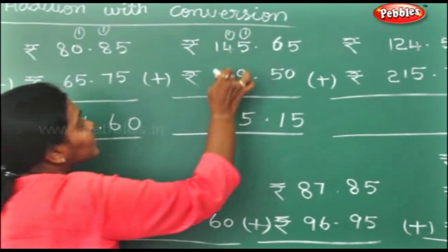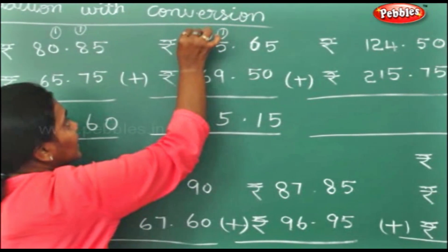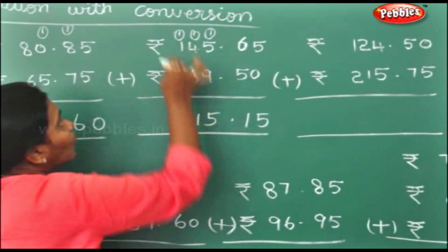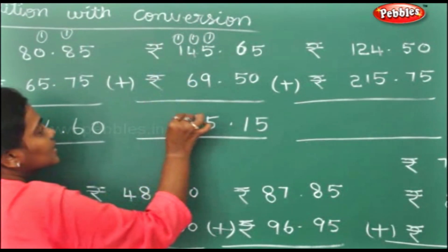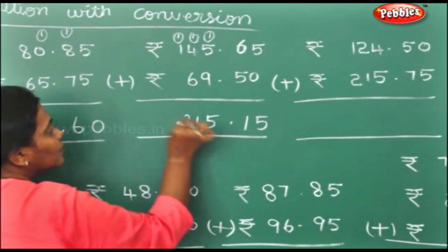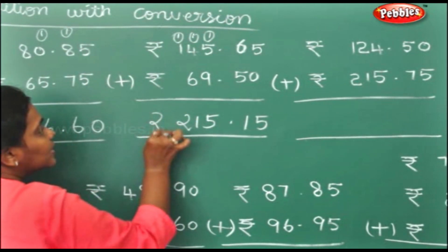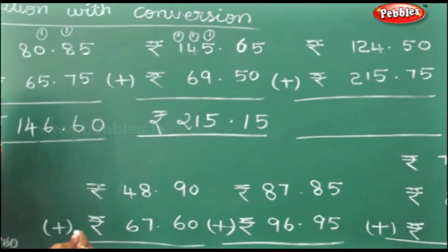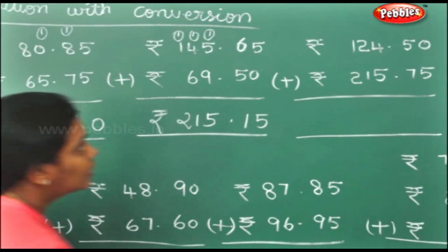4 plus 6 is 10. 10 plus 1 is 11. 1 plus 1 is 2. So rupees 215 and 15 paise.